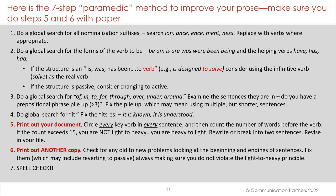To apply these principles, use a seven-step paramedic method — make sure you do steps five and six with paper. One: do a global search for all your nominalization suffixes — -ion, -ance, -ence, -ment, etc. — and replace with verbs where appropriate. Two: do a global search for forms of the verb 'to be' — be, am, is, are, was, were, been, being — and helping verbs have, has, had. If you see a structure like 'is designed to solve,' consider using the infinitive 'solve' as the real verb; if the structure is passive, consider changing to active. Three: do a global search for of, in, to, for, through, over, under, around — examine those sentences. Do you have a prepositional phrase pile-up greater than three per sentence? Fix it, which may mean using multiple shorter sentences.